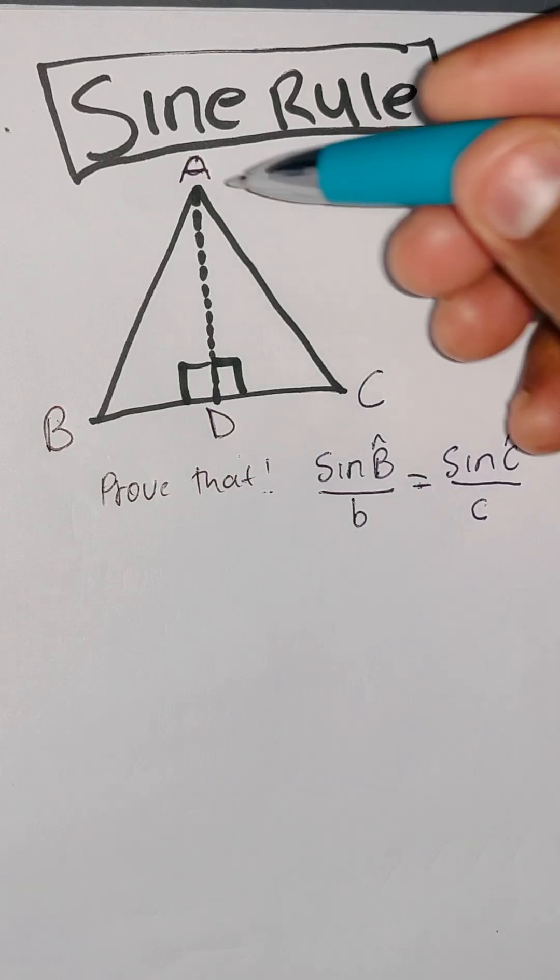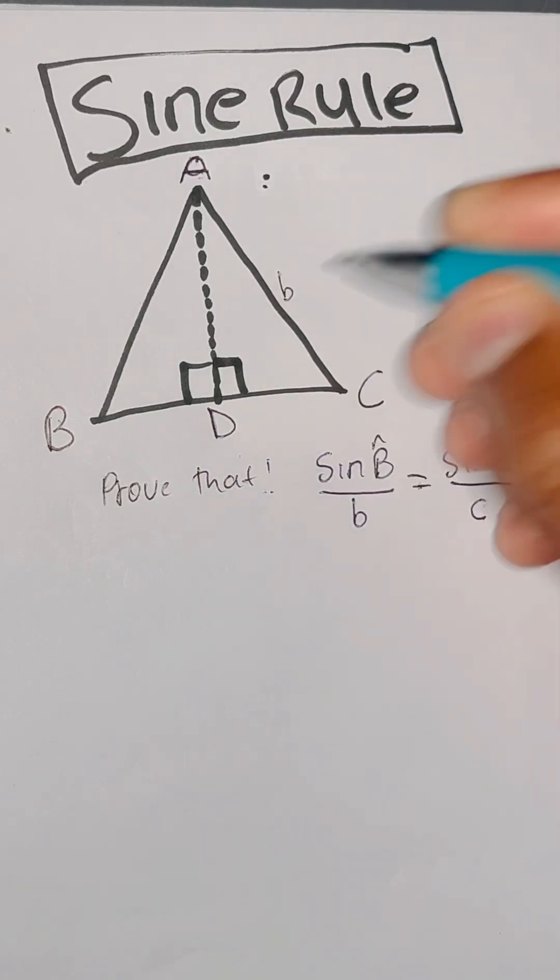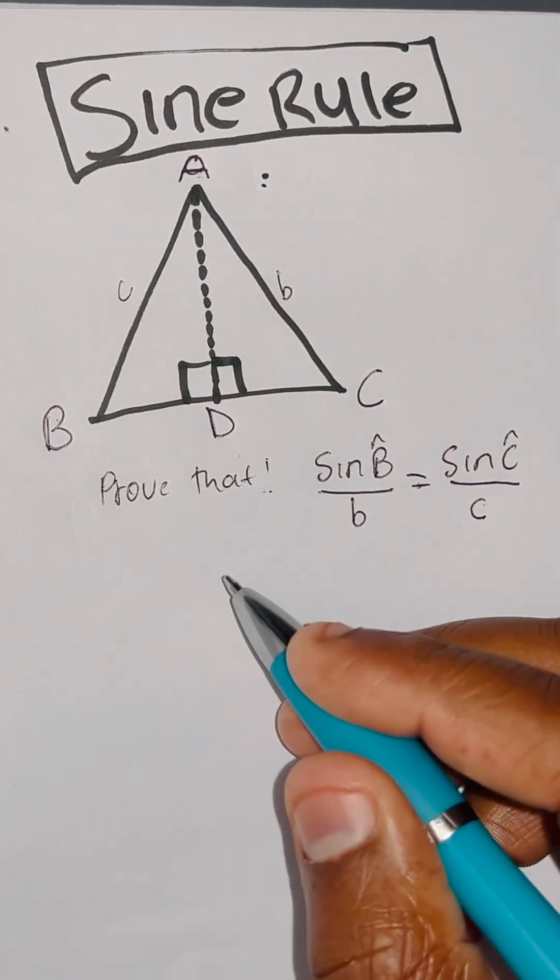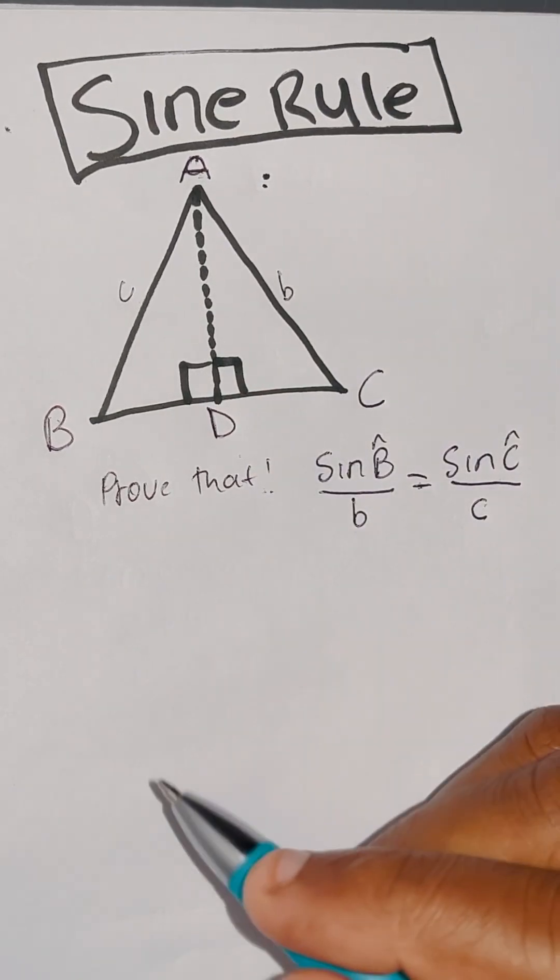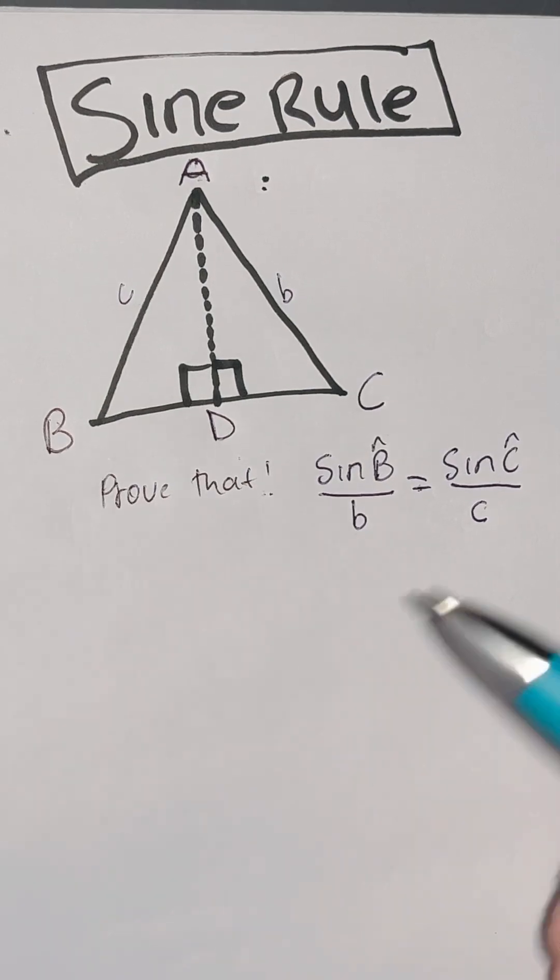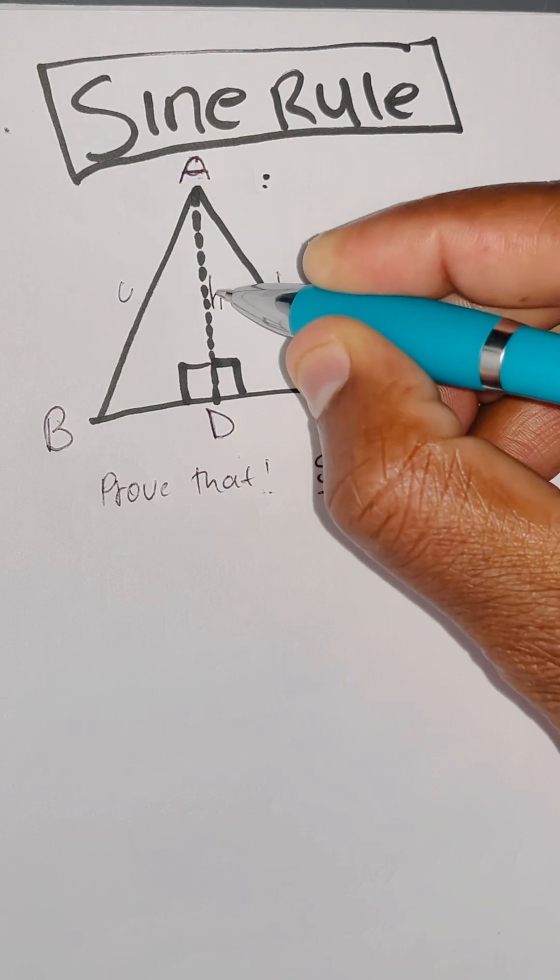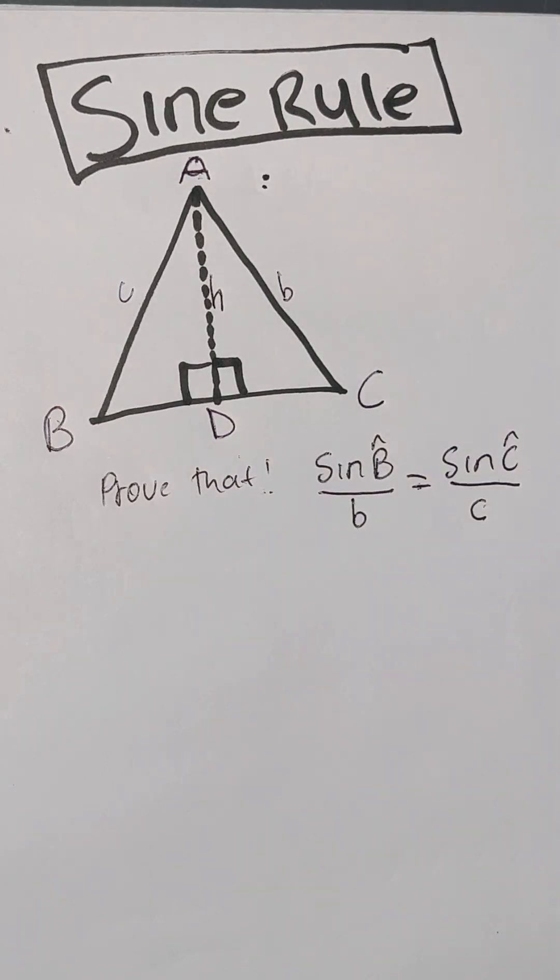And then you know that AC is small letter b, AB is small letter c, and then AD is small letter h, which is the perpendicular height, right?